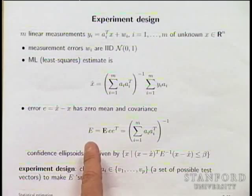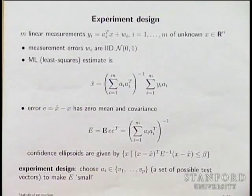This is a vector optimization problem because one person's error covariance matrix could be very small in one direction and big in another. So the first thing is you have to scalarize, and the second is the issue of relaxation — from an integer problem to a continuous problem. The most common scalarization is D-optimal experiment design.